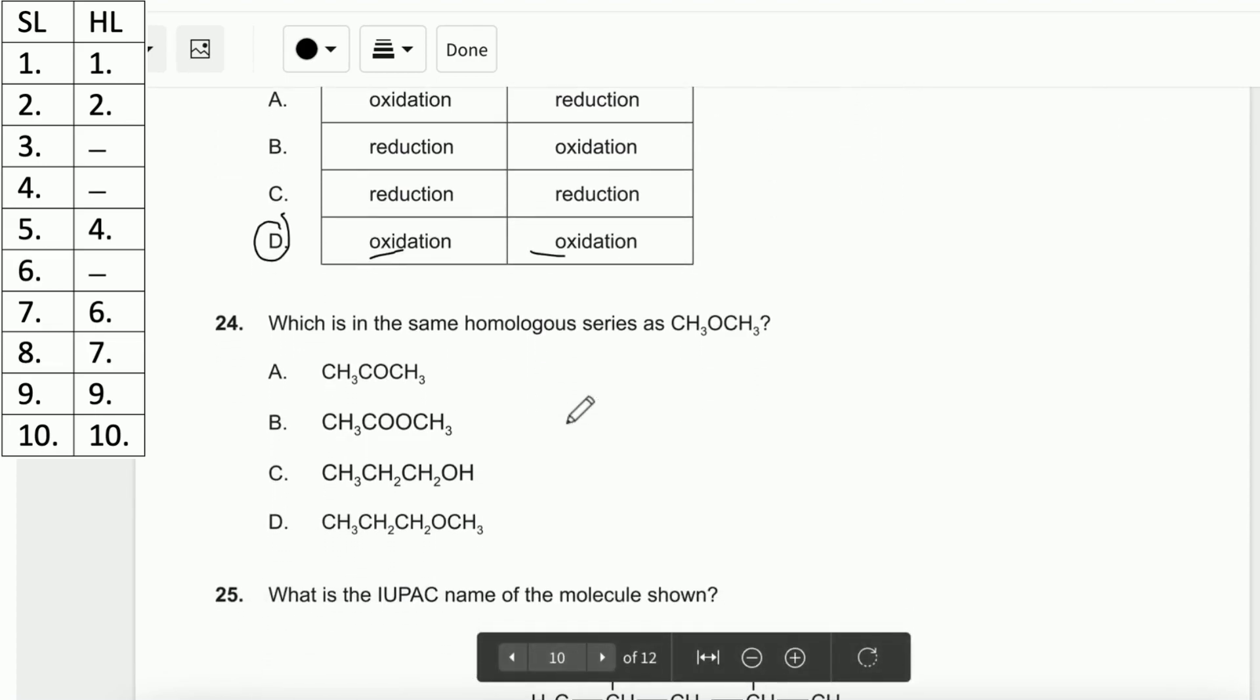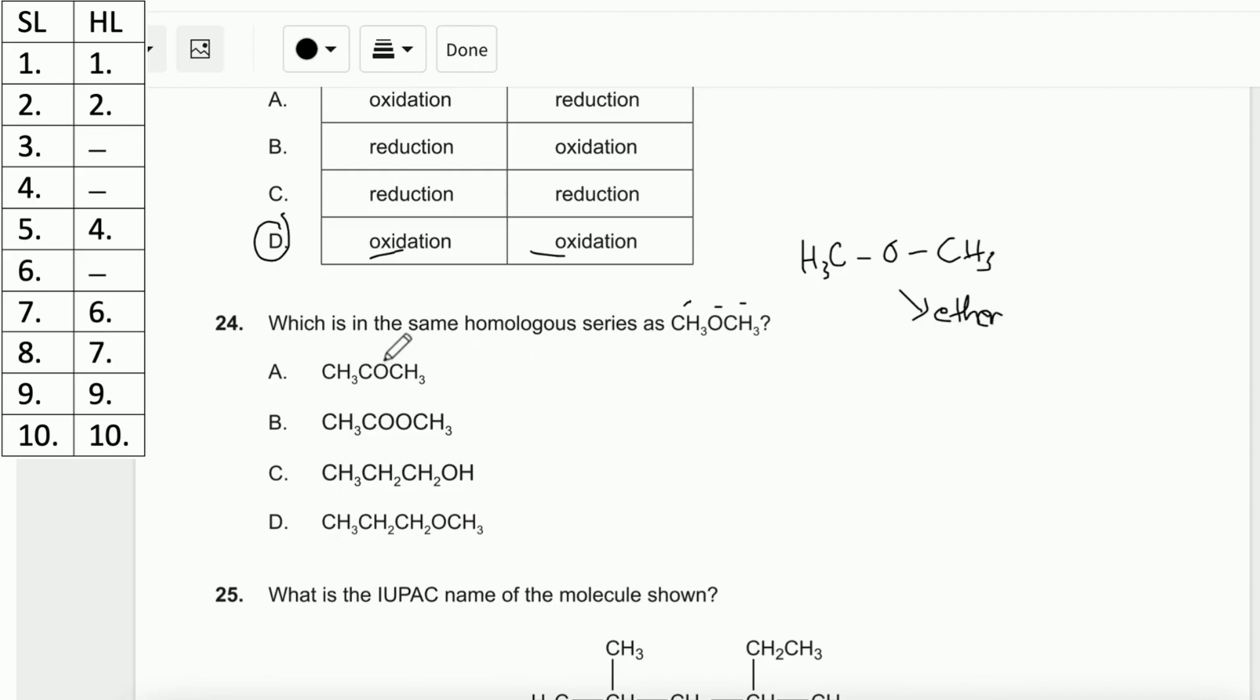Number 24. Which is in the same homologous series as CH3OCH3? If we draw it, CH3OCH3 is an ether. Option A is a ketone because it has C=O. Option B is an ester because it has two oxygens. CH3CH2CH2OH has one oxygen but it's alcohol. So the answer is D - it has one oxygen in the middle, the same as this ether structure.